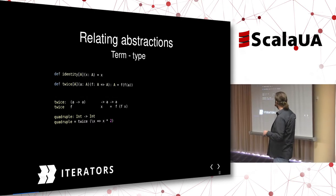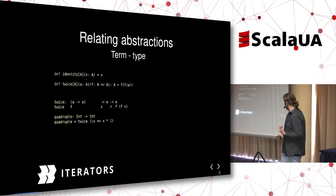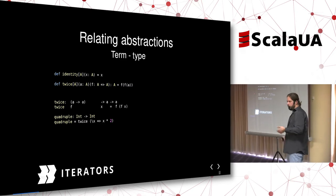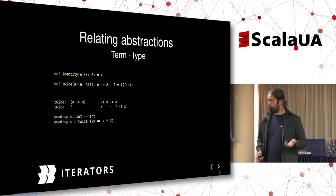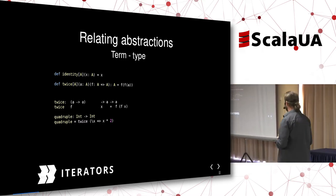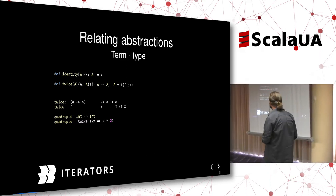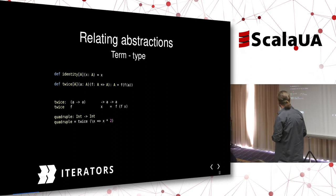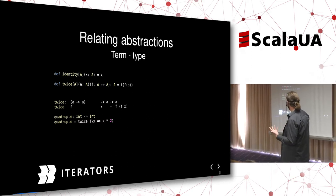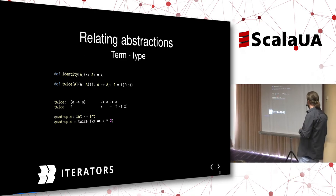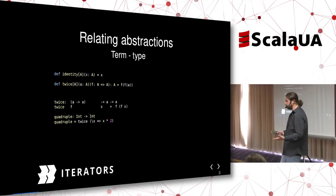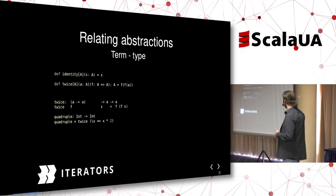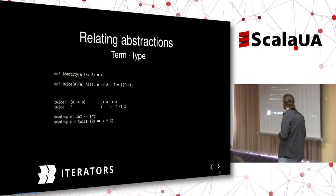When a term depends on a type, you can have functions like the identity function, which works for any type — here identity is a term that depends on type A. You can have a function like twice, which calls any other function twice, and so on. That's parametric polymorphism, basically.